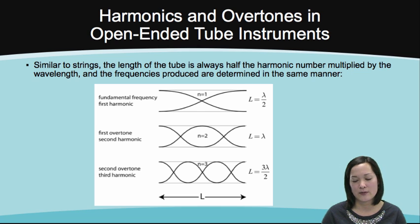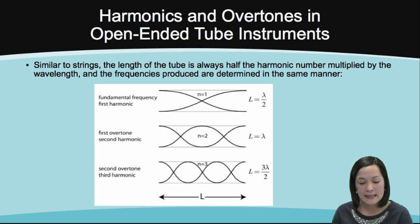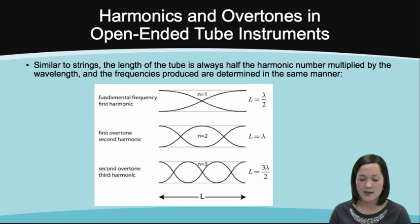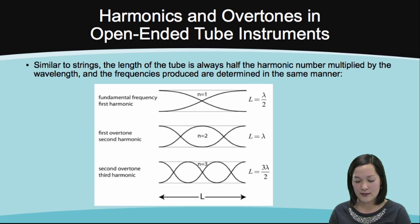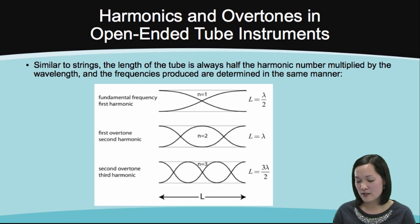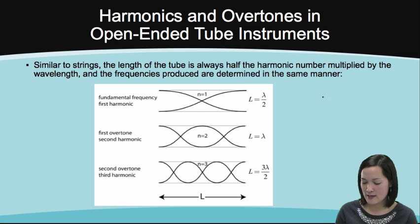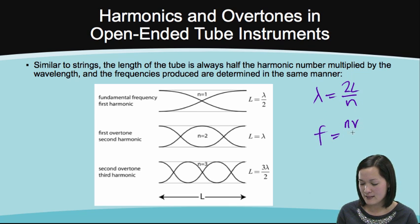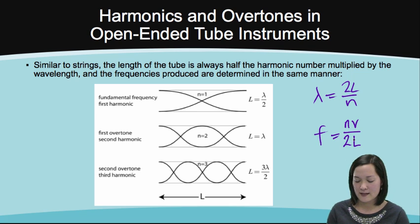To find the harmonics and overtones in an open-ended tube instrument, it's similar to strings, and the length of the tube is always half the harmonic number multiplied by the wavelength, and the frequencies produced are determined in the same manner. The frequency and wavelength equations are the same: lambda is equal to 2L over N, and frequency is equal to N times v over 2 times the length of the tube.